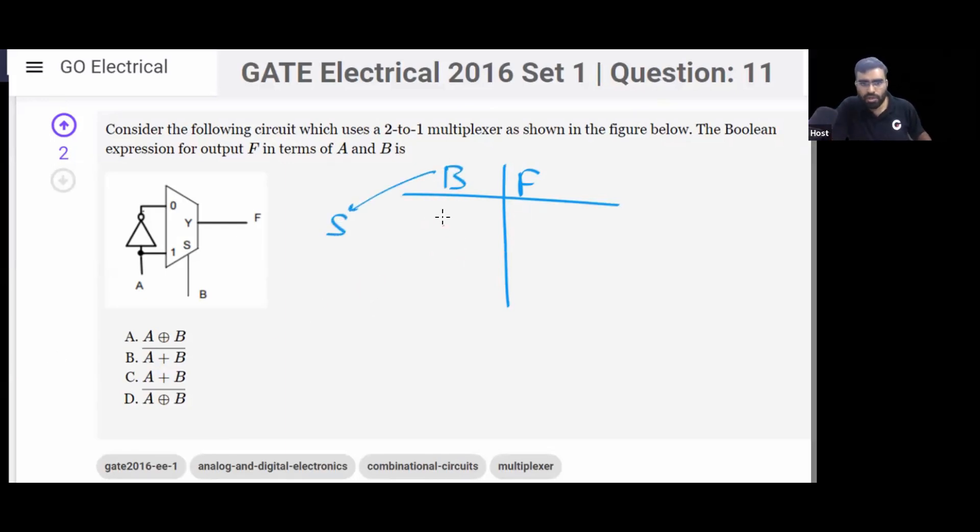So if you put B equal to zero on the select line, what will the output be? If you give this input zero, then F will be I₀. The output will be I₀, and I₀ is A̅. You can see I₀ is A̅. This means A̅.